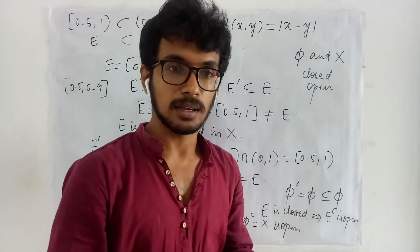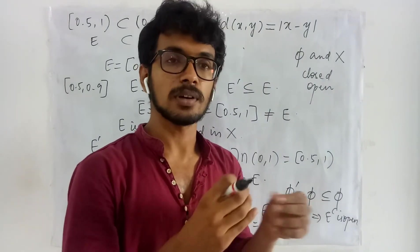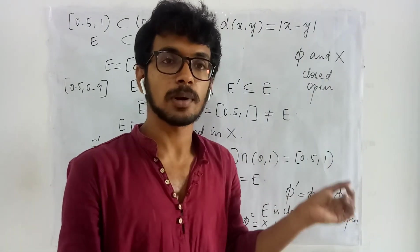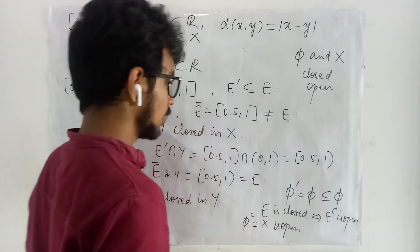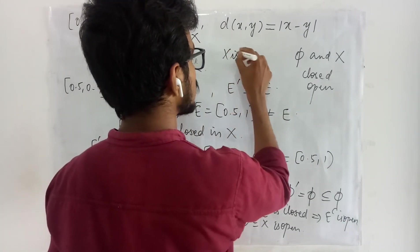When you consider entire X what are you going to get? All the points are inside it. So whenever you talk for the limit points you will get all the limit points to be present in it. Therefore X is closed you are getting.